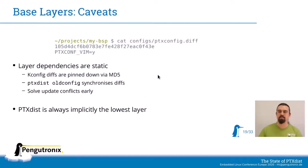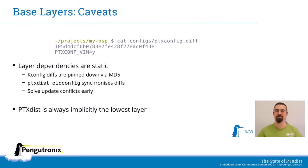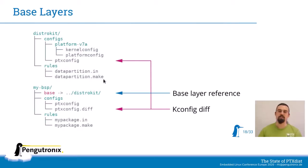There are some caveats. As we saw, the .diff KConfig diff contains the MD5 sum — configs are pinned via MD5 and you can run oldconfig to synchronize these diffs. It has the implication that you solve update conflicts early. And PTX-DISTS is always used as the lowest layer implicitly — so for example, the DistroKit layer doesn't have a base link, but PTX-DISTS would just use its own install directory as a base layer.